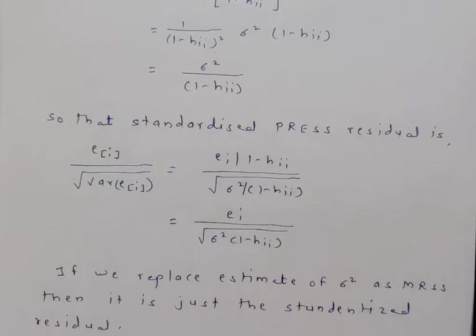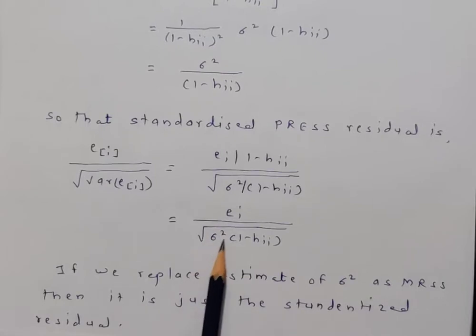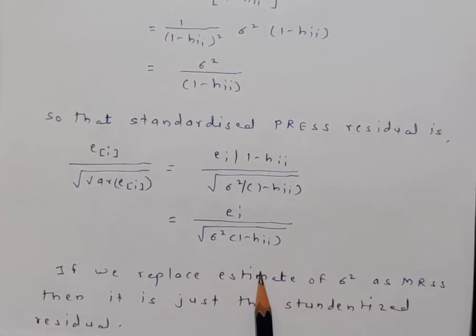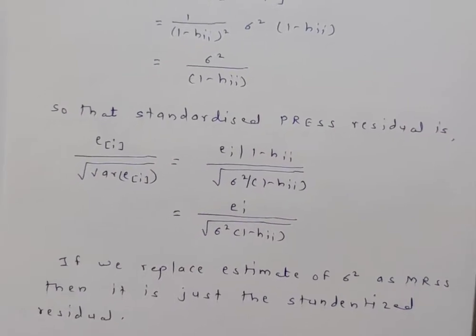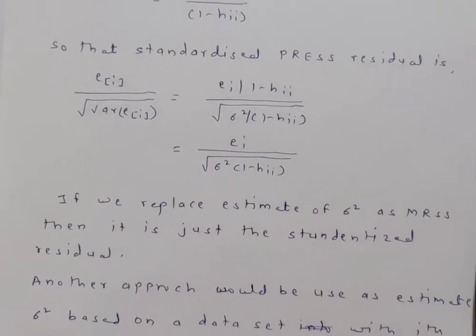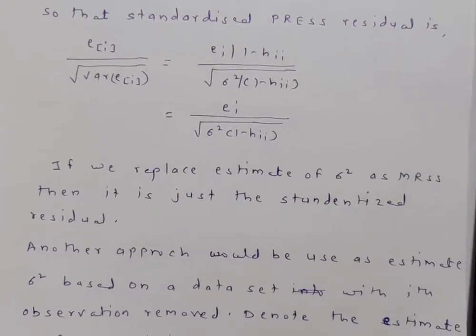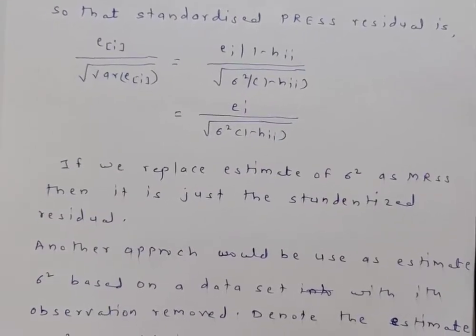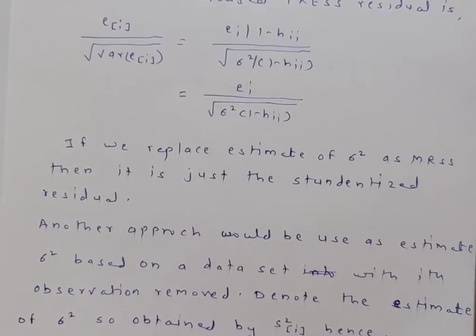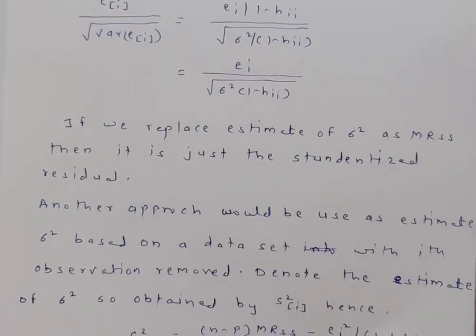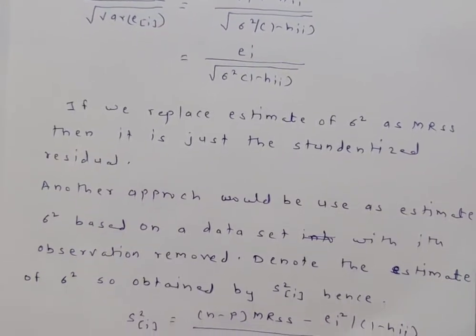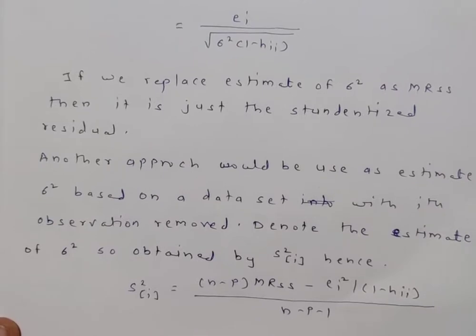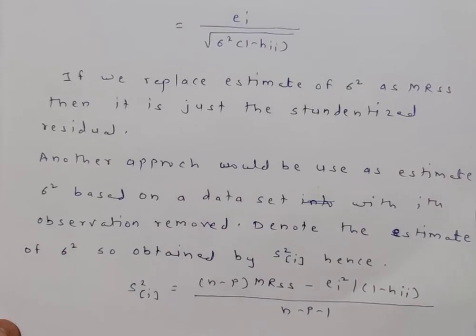Another approach is to estimate σ² based on the data with the i-th observation removed. Denote this estimate S²_(i). It is given by: S²_(i) = [(n − p)·MS_Res − e_i²/(1 − h_ii)] / (n − p − 1).